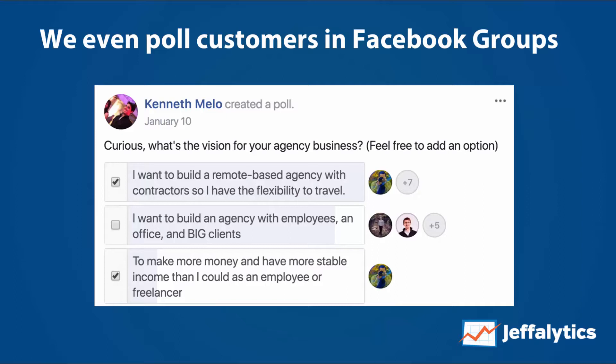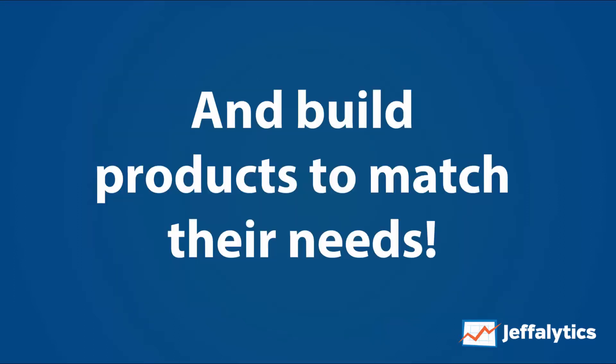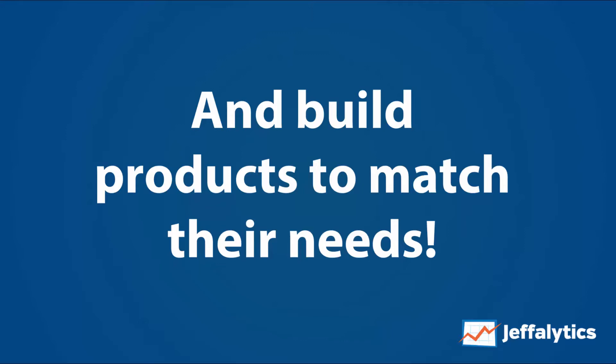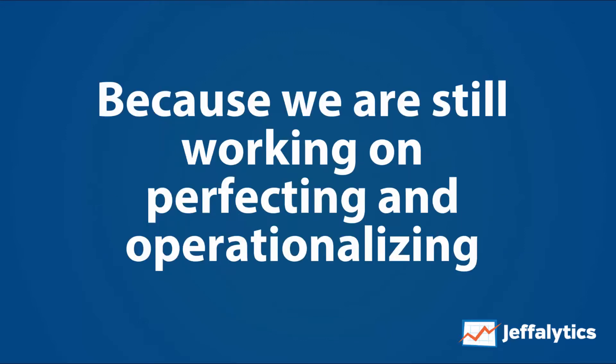We'll even go as far as to poll customers in Facebook groups to understand what they're looking to do and how they're looking to do it. As you can see here, we ask what the vision is for their agency business and then build products to match their needs. Now this is a beta process because we are still working on perfecting and operationalizing it. We still need to do a lot of research and market testing before we develop a product, and we still have to think about scheduling and where it fits into our overall product ladder here at Jefflytics.